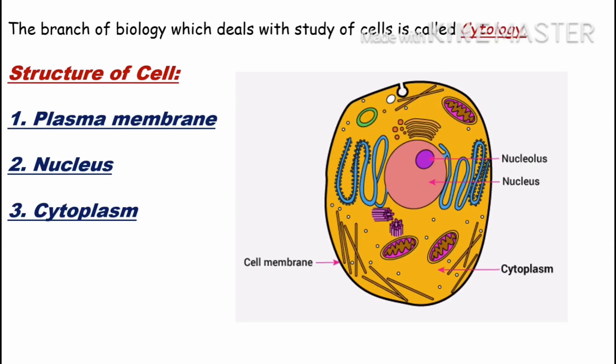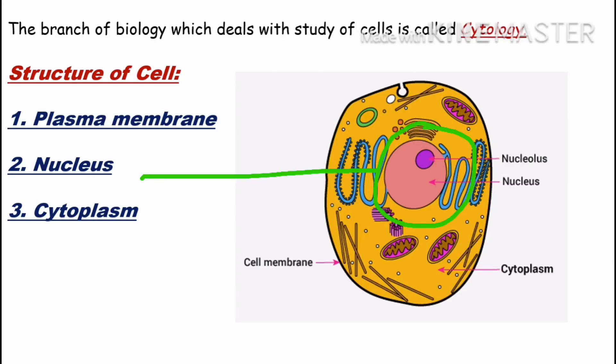Plasma membrane cell ki outermost covering hoti hai. Jo baahar ki covering dikh rahi hogi black color ki is cell mein, voh plasma membrane ya cell membrane hai. Cell membrane aur plasma membrane mein confuse nai hona — dono ek hi cheez hai. Second hai nucleus — yeh cell ke andar ek round shaped structure hai. Third is cytoplasm — plasma membrane aur nucleus ke beech mein ek jelly-like fluid hota hai, jo is diagram mein yellow color mein dikh raha hai.